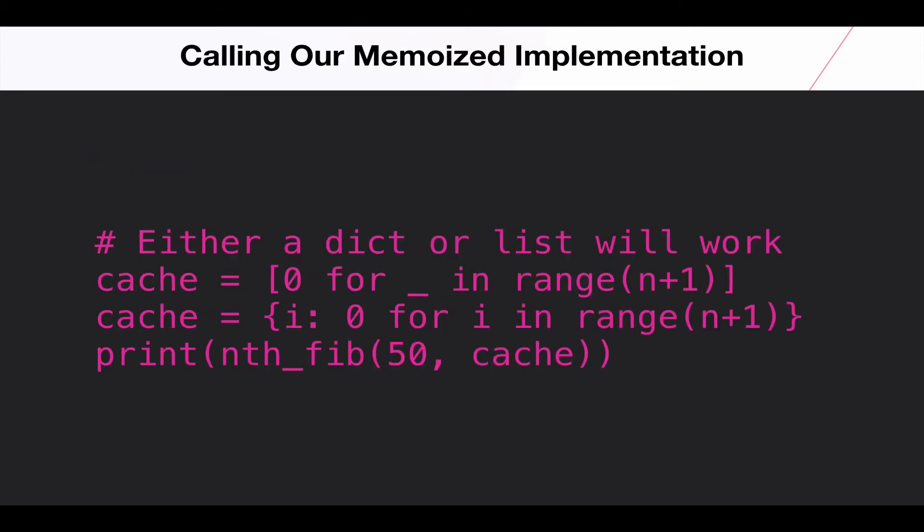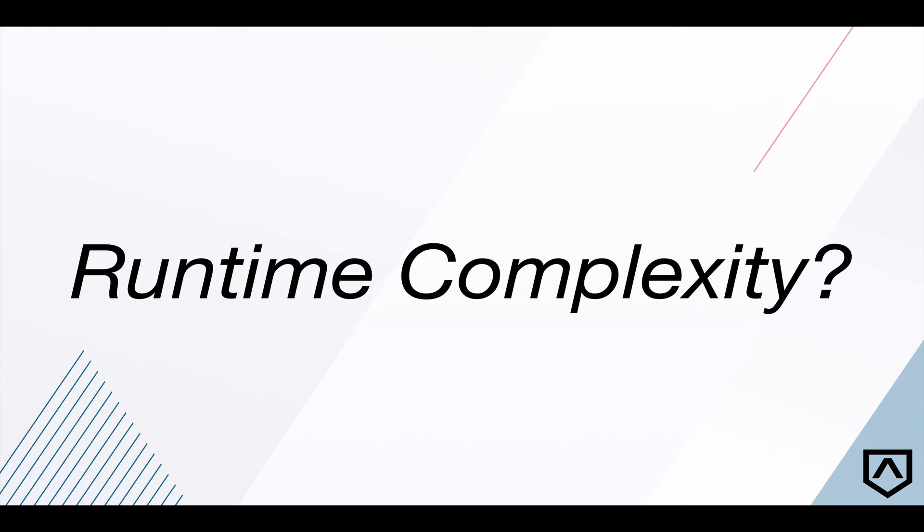And again, if we want to actually use this, we'll have to go and initialize the cache outside of our recursive function and then pass that in to the initial call to our nth Fibonacci function. We can do that in a number of ways. We can, for example, use a list like we're doing with the first line, or the second option can be using a dictionary. And then we might call our nth Fibonacci. If you try this now, you can try this code in your Python REPL and print out the answer you get for running nth Fibonacci with 50 again and passing in the cache.